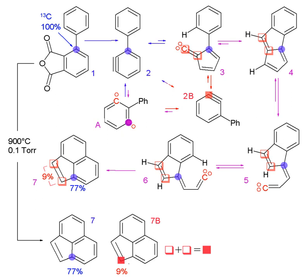Stable isotope traces involve only non-radiogenic isotopes and usually are mass-dependent. In theory, any element with two stable isotopes can be used as an isotopic tracer. However, the most commonly used stable isotope traces involve relatively light isotopes, which readily undergo fractionation in natural systems.